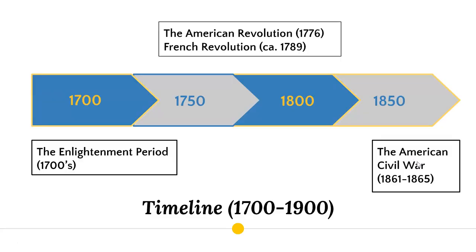Let's begin with the timeline — where are we and what are we talking about in this series of lectures? We're going to be discussing roughly 1700 to 1900. We're moving past the Enlightenment period and the American Revolution, but we're not quite yet to modern day world history of the 1900s or the 21st century. We should know that much of this is all happening at the same time as one another.